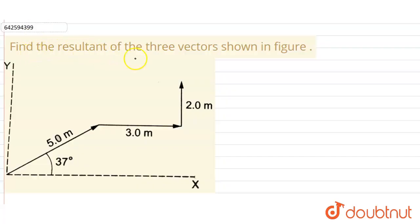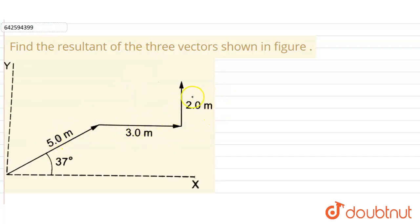Our question is: find the resultant of the three vectors shown in the figure. We have been shown three vectors — the first one is 5 meters in length, the second one is 3 meters in length, and the third one is 2 meters in length. We have to find the resultant of all three.